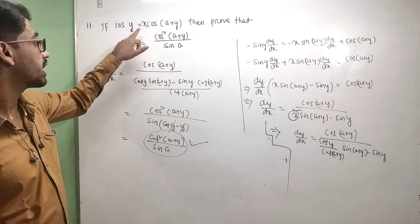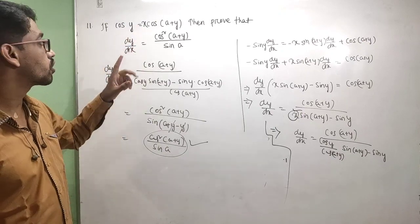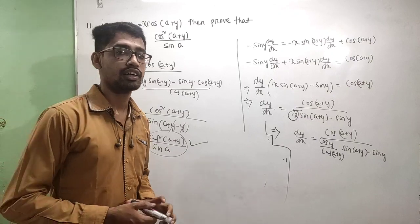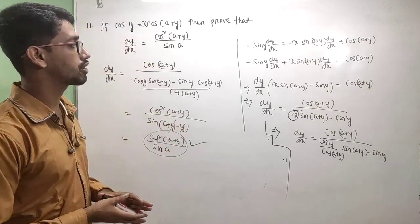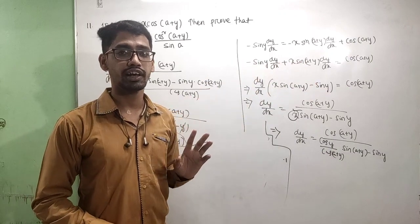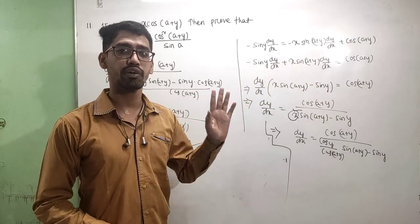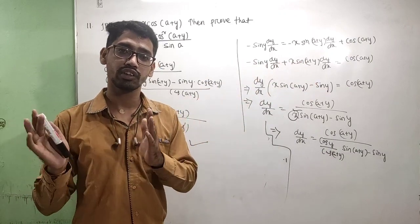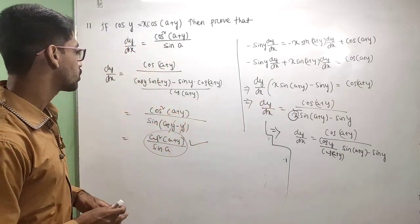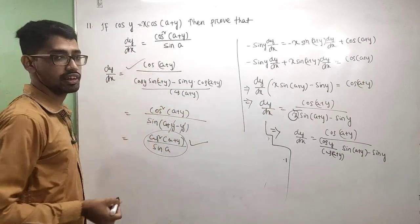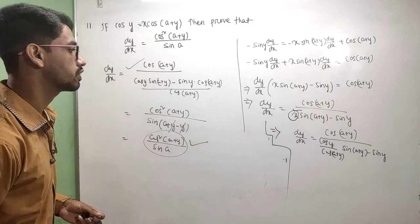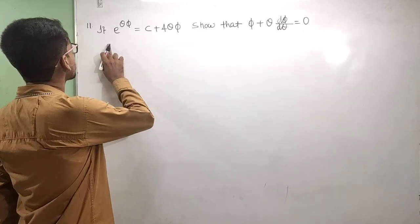So that is the required solution. To summarize: we differentiated both sides with respect to x, collected the dy/dx terms on one side, divided, then substituted the value of x and solved. That completes this important question.